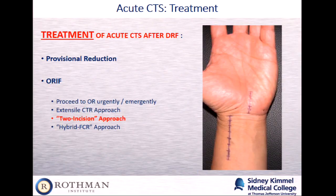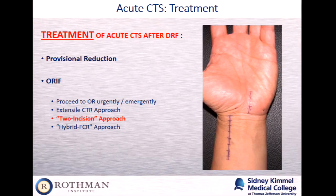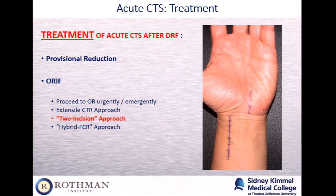The second way is a two-incision approach, probably the more common technique nowadays. You approach the carpal tunnel and the distal radius separately through their individual incisions. You perform a standard carpal tunnel release, make sure you're satisfied with it, then address the distal radius. If using the volar approach, you want to make sure there's no fascial bridge remaining and that you've adequately decompressed both the carpal tunnel and the forearm fascia, connecting the two exposures.